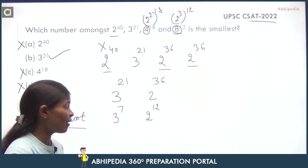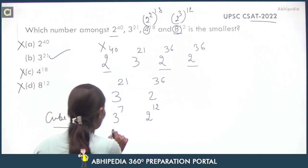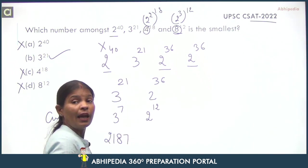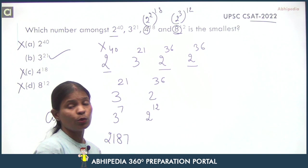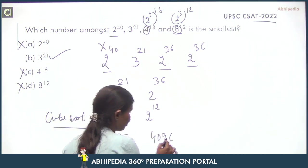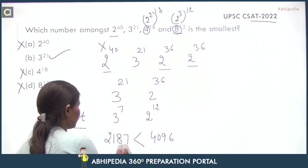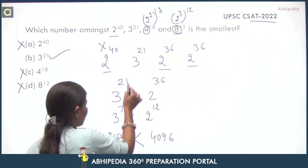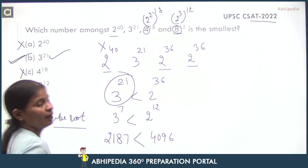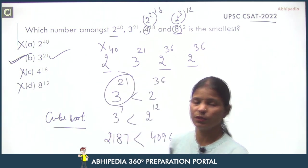That means 3 raised to power 7 is 2187, and 2 raised to power 12 is 4096. This is the smaller number, so your answer is again 3 raised to power 21. 3 raised to power 21 is your correct answer.